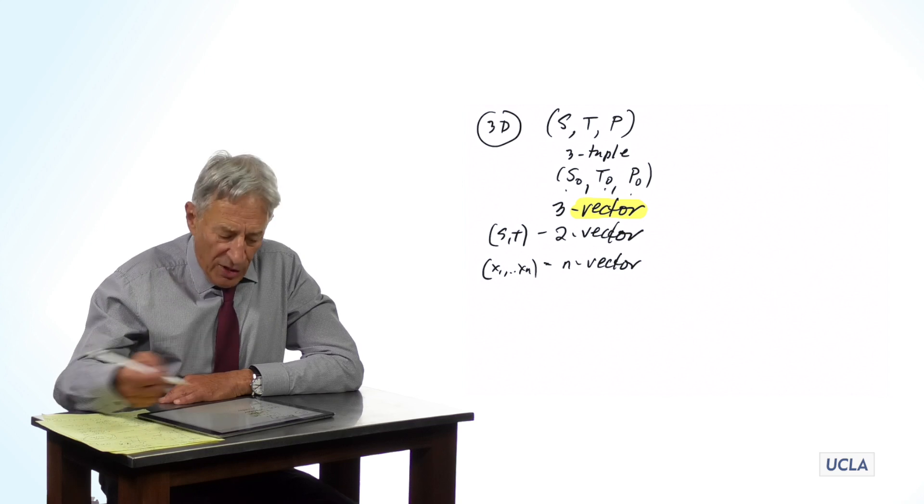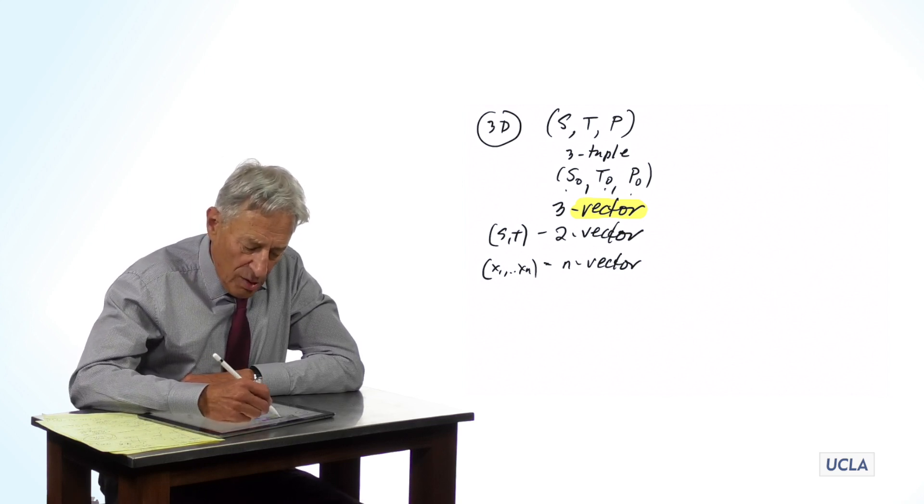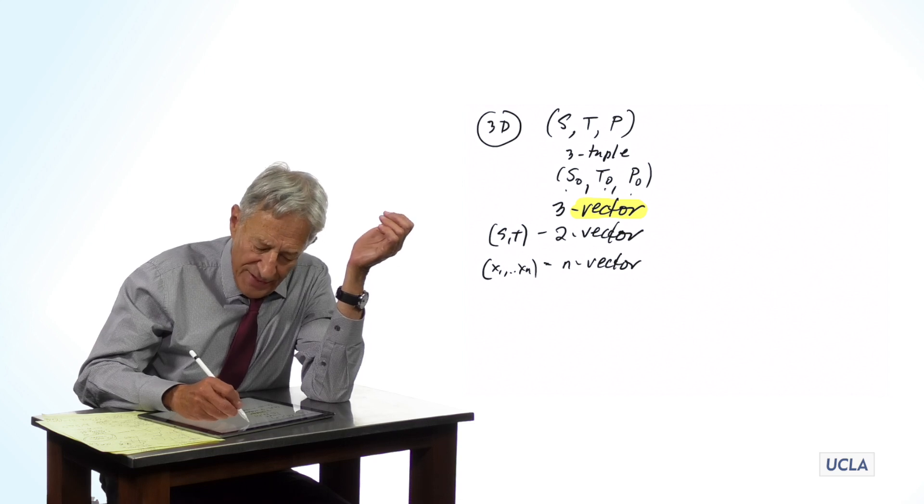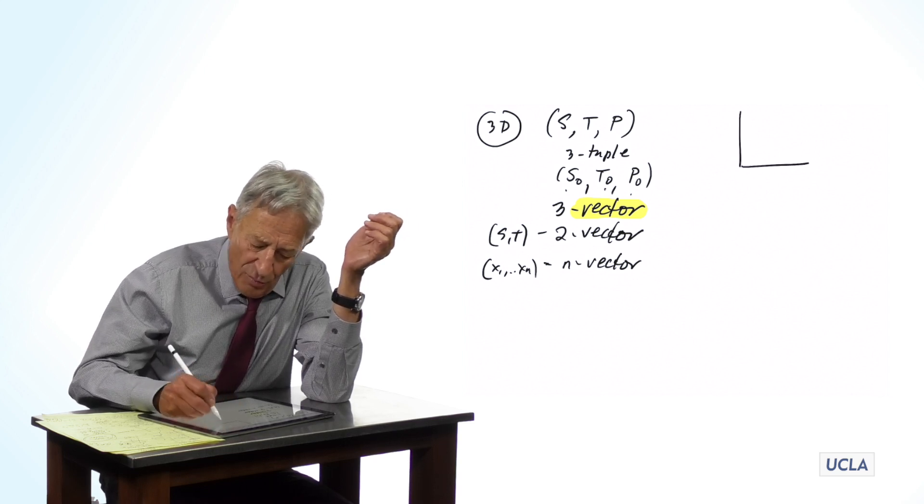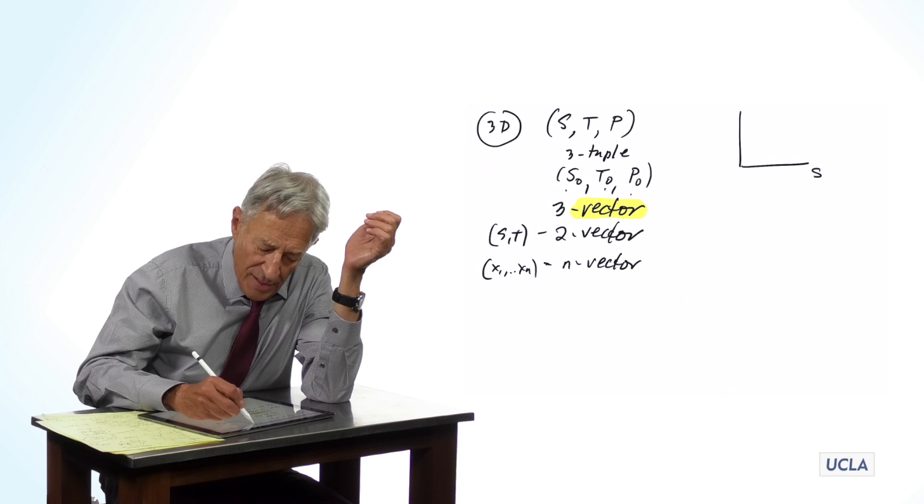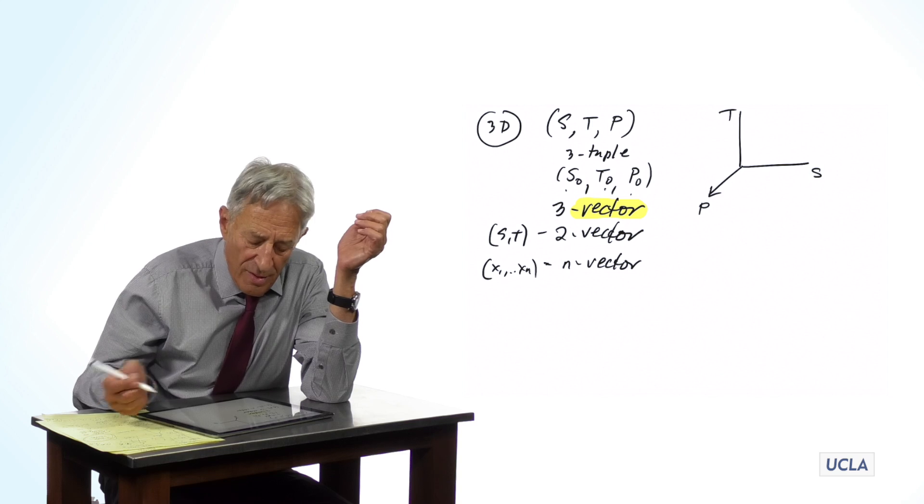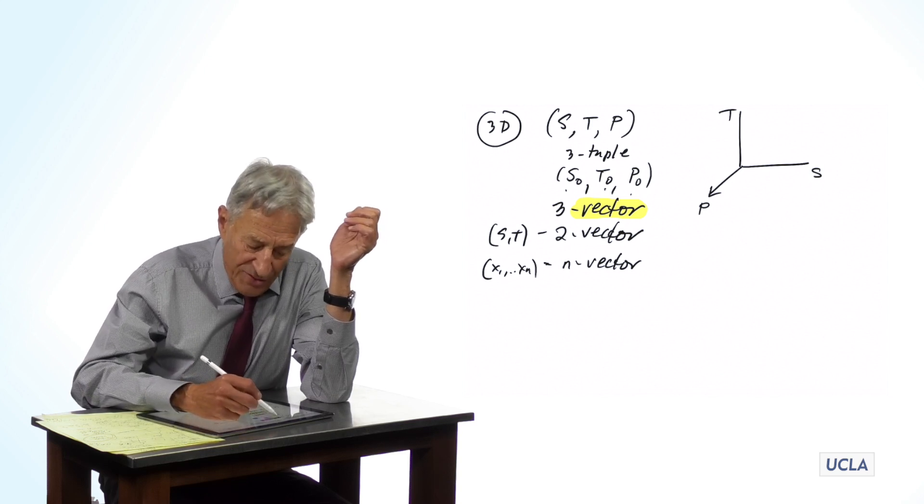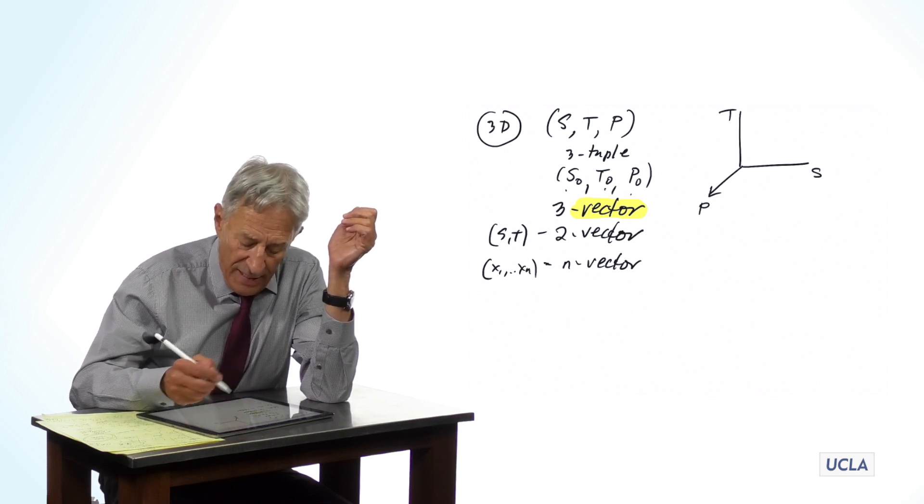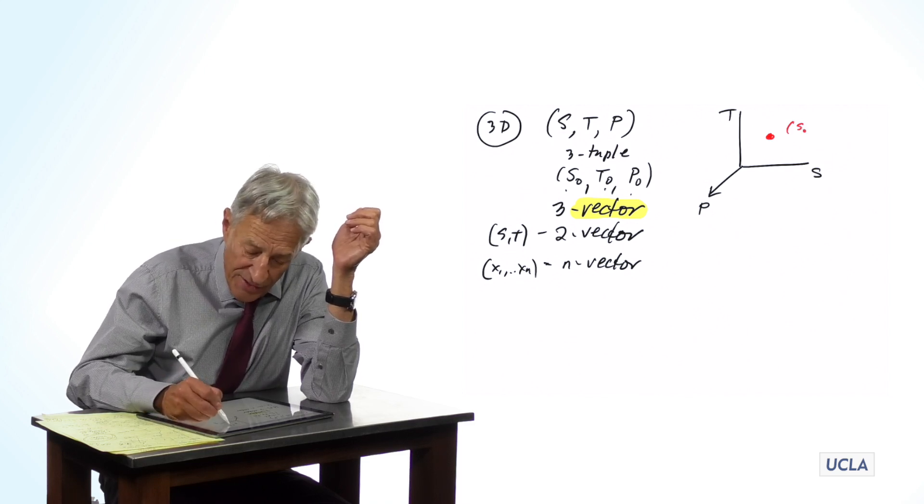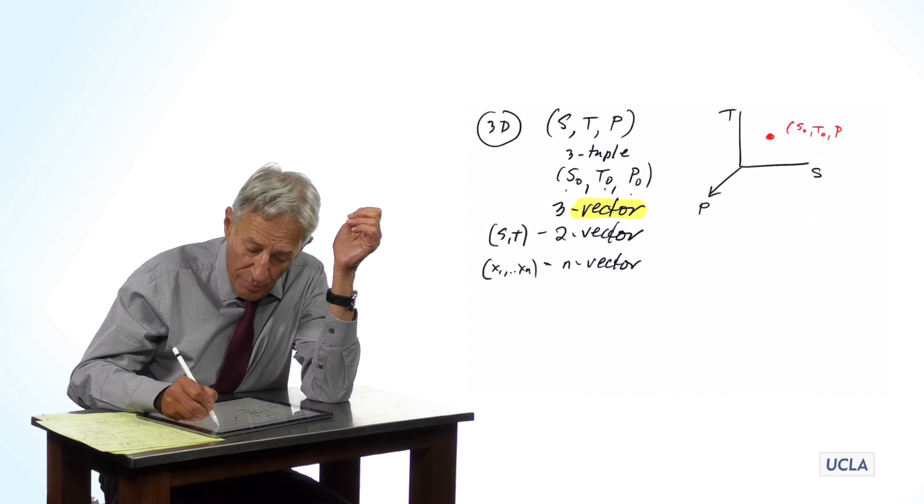Now naturally, when we go over to the geometric picture, you can pretty much anticipate what it is. We have a shark axis, and we have a tuna axis, and now we have a plankton axis. And a point in shark-tuna plankton space, S0, T0, P0,